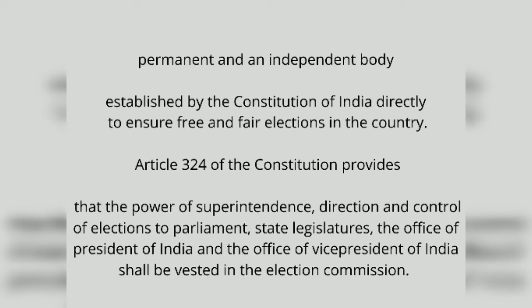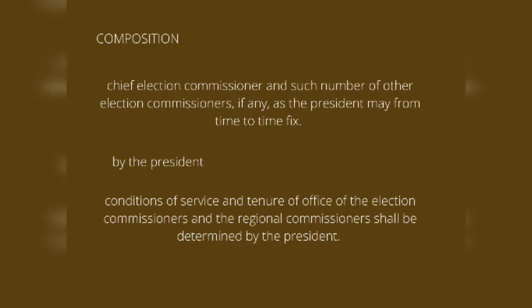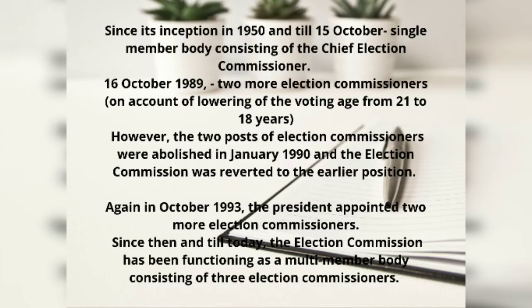The Election Commission handles the conduct of elections. The composition of the Election Commission is not fixed by the Constitution, but is determined by the president from time to time. The president also determines the conditions of service and tenure of the Election Commission members. In the beginning, starting in 1950, there was only a Chief Election Commissioner.